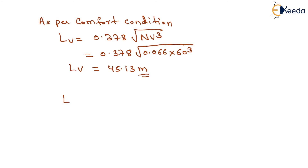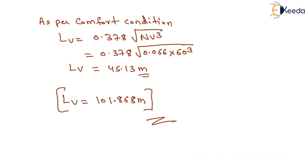So the governing length of valley curve equals 101.868 meters, since it satisfies both conditions and is the larger value. That is the complete answer to this question. Thank you very much, students.